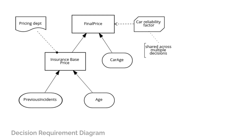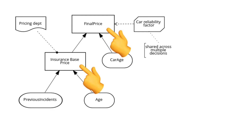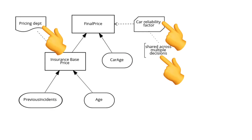In a decision model, a decision requirement diagram represents visually the graph of business requirements that supports a given decision. You can find input data nodes for the inputs, decision nodes, and reusable logic components, as well as helpful annotations.